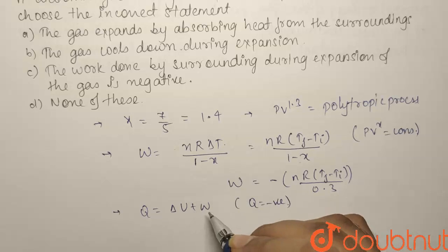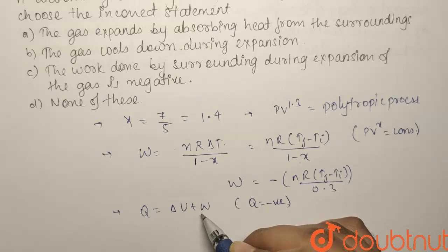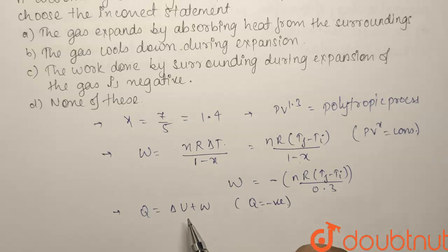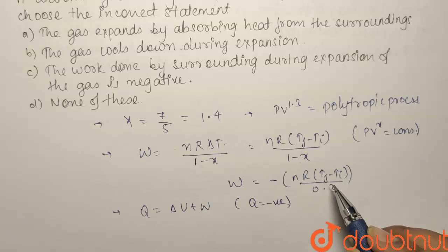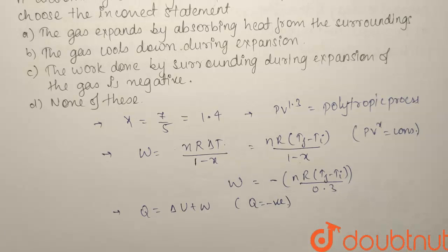Now, you can see that W for expansion is positive. And for delta U, if expansion has to be there, the final temperature has to be less than initial temperature. So, delta U will be negative.